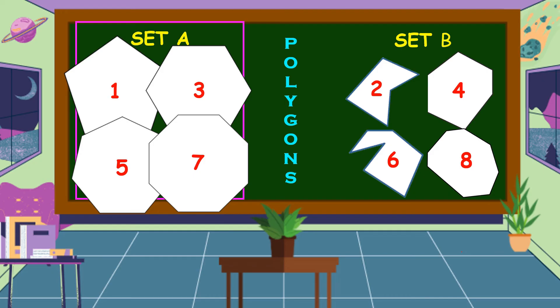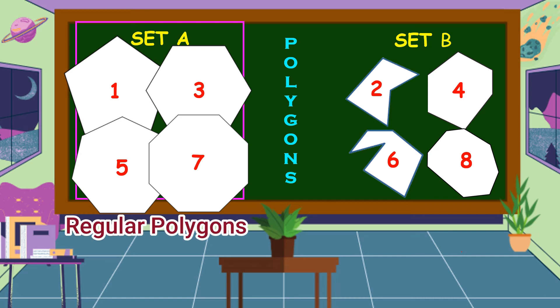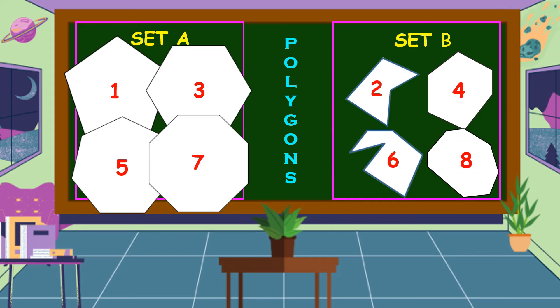Yes, their sides have the same length, and their angles are the same too. If the sides and angles of a polygon are the same, we call it a regular polygon. Therefore, the polygons in set A are regular polygons.